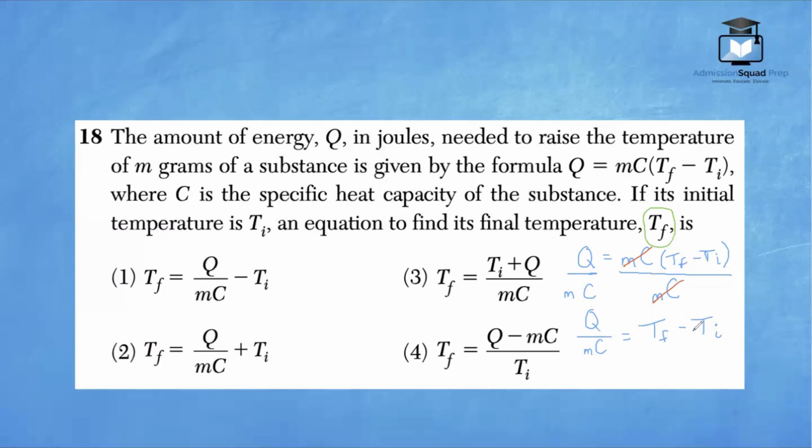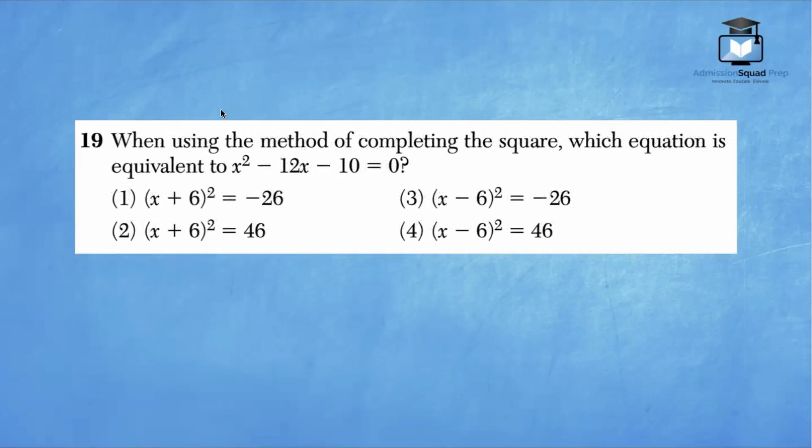Because we're solving for T sub F, we're going to leave that one alone. But we do want to move this minus T sub I over by performing the inverse operation. So we add T sub I on both sides. So our final answer is T sub F equals Q over MC plus T sub I. The correct answer here is choice two.